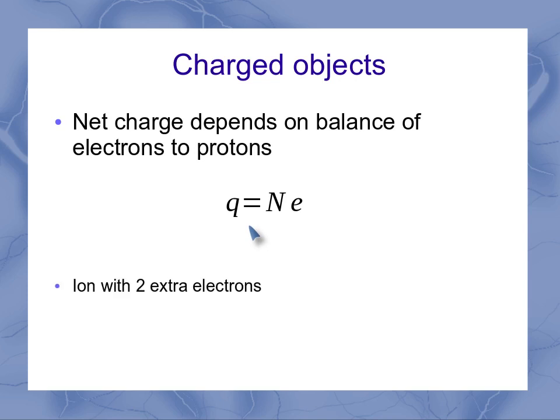If I have an ion that has two extra electrons, then that means I'm going to end up having a charge of minus 2E. It's negative because I have extra electrons, and there are two extra ones. Now an ion is just an atom where the electrons and protons aren't exactly the same number. So I might have 10 protons but 12 electrons in this particular example.